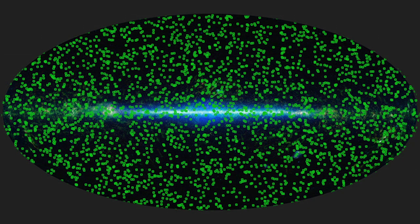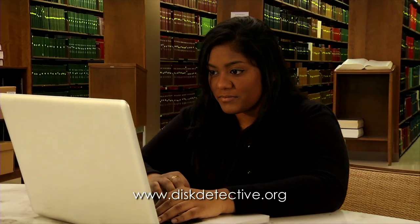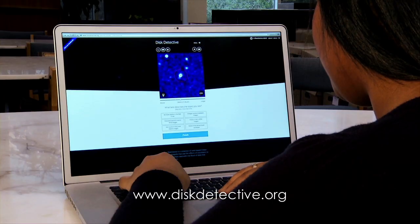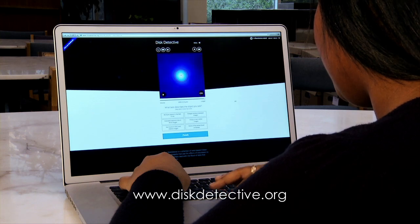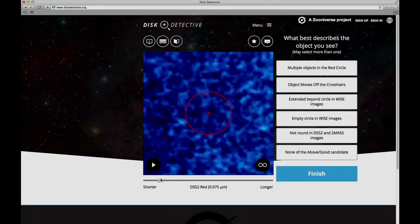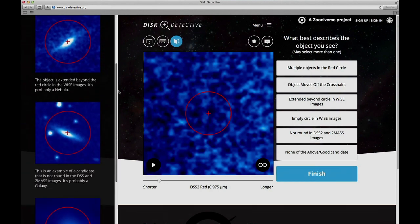So last year, NASA and Zooniverse launched Disk Detective. At diskdetective.org, you can watch 10-second videos of images from the WISE All-Sky Survey and other projects. Some images show protoplanetary and debris disks, the homes of extrasolar planets.